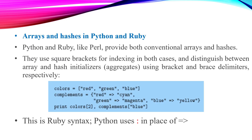In Python and Ruby, arrays and hashes use square brackets for indexing in both cases. They distinguish between array and hash initializers using bracket and brace delimiters. For example: colors = ['red', 'green', 'blue'] is an array using square brackets. complements = {'red': 'cyan', 'green': 'magenta', 'blue': 'yellow'} is a hash table using curly braces.